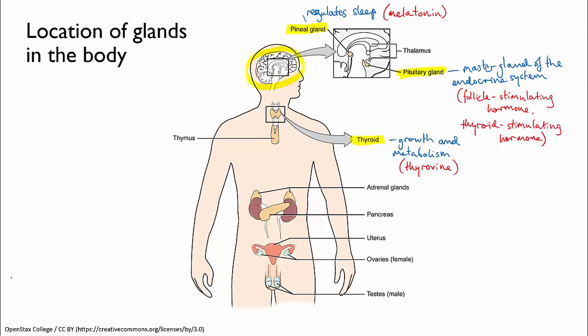The adrenal glands sit on top of each of your kidneys and produce adrenaline, which helps regulate the fight-or-flight response, along with a range of other hormones involved in growth and metabolism.